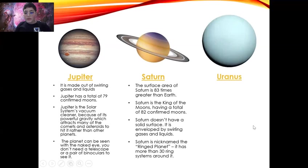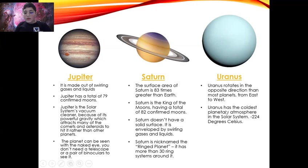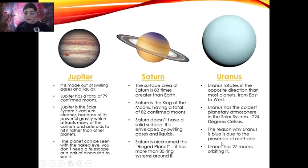Uranus. Uranus rotates in the opposite direction than most planets, from east to west. Uranus has the coldest planetary atmosphere in the solar system, minus 224 degrees Celsius. The reason why Uranus is blue is due to the presence of methane. Uranus has 27 moons orbiting it.